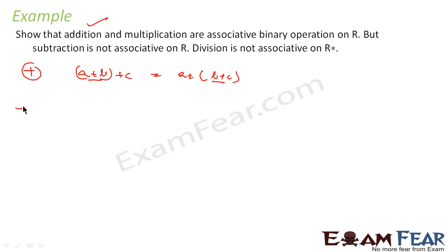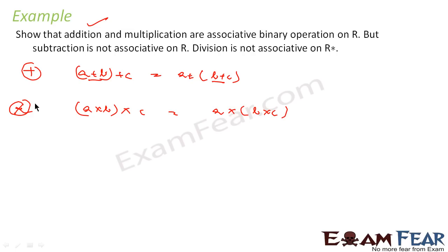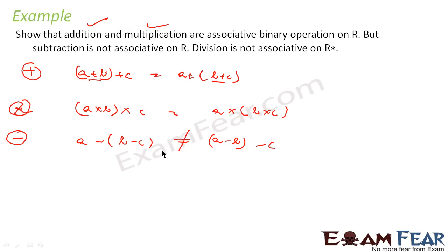Similarly for multiplication, (A×B)×C equals A×(B×C), so multiplication is also associative. But for subtraction, (A−B)−C and A−(B−C) are not the same — they are different. That is why subtraction is not associative.